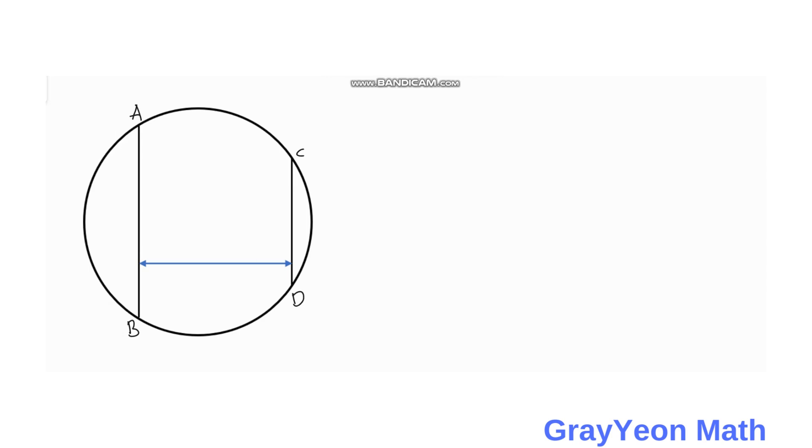Chord AB measures 20 cm while chord CD measures 8 cm and the distance between the two chords is 12 cm, and we are to find the radius R.